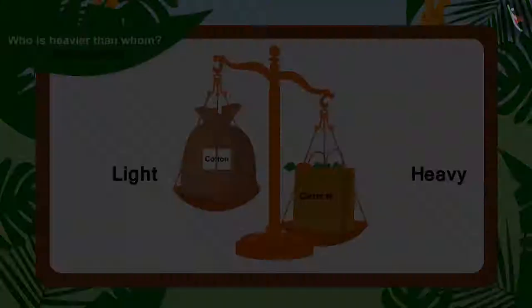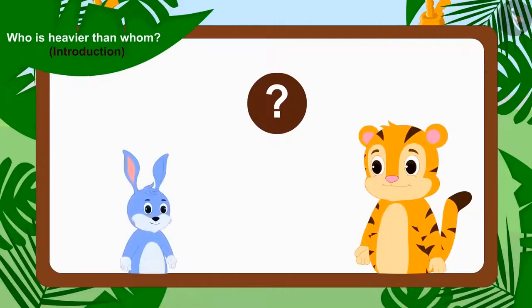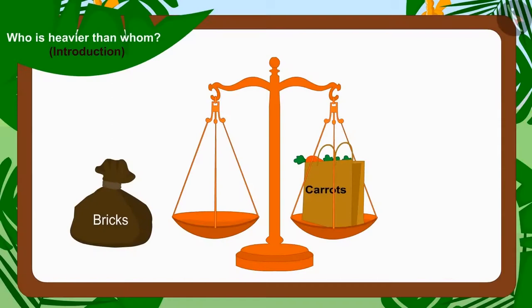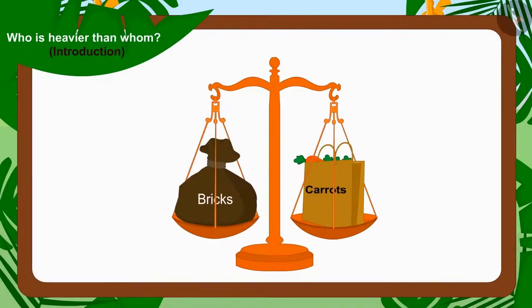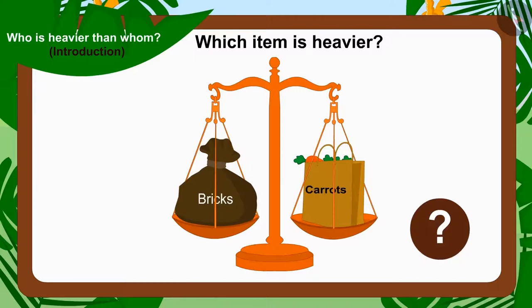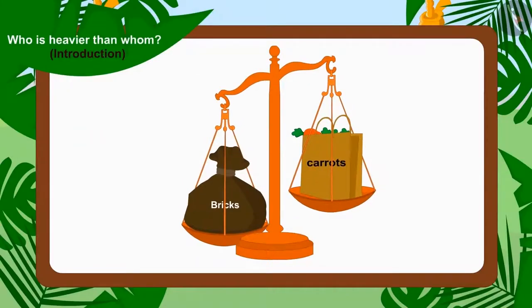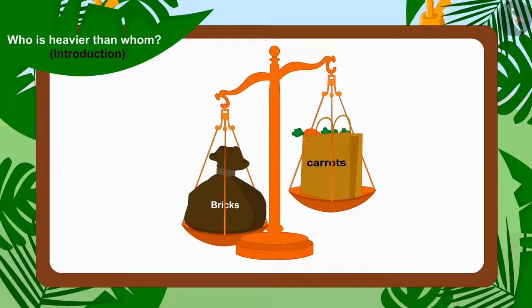Now, the competition will be between Sheer Khan and Bunny. Uncle replaced Bhola's sack with the sack filled with Sheer Khan's bricks. Can you tell which of these items is heavier? Your answer is absolutely correct. This time, the scale tips towards the sack filled with Sheer Khan's bricks, so the sack with Sheer Khan's bricks is a lot heavier than Bunny's bag filled with carrots.